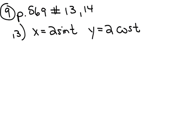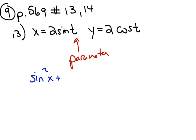When dealing with parametrics and needing to eliminate the parameter — remember, t is called the parameter — one way you can approach the problem is by graphing it. I'm going to do this algebraically, though. One thing we know from trigonometry is that sine² x plus cosine² x equals 1. That is a Pythagorean identity that is always true.